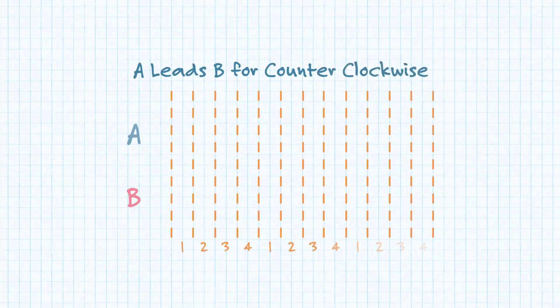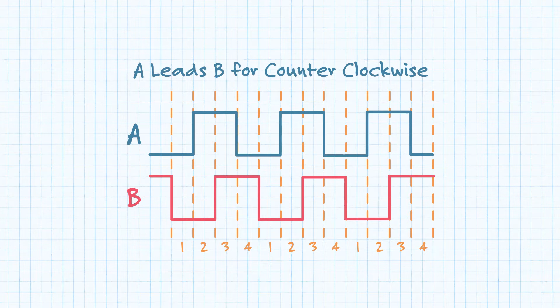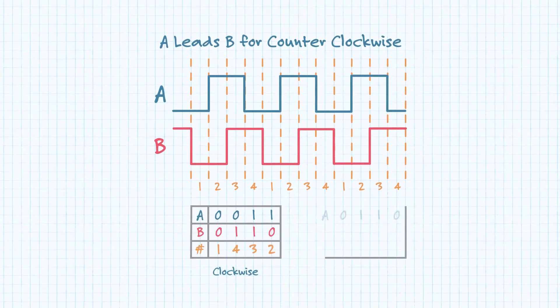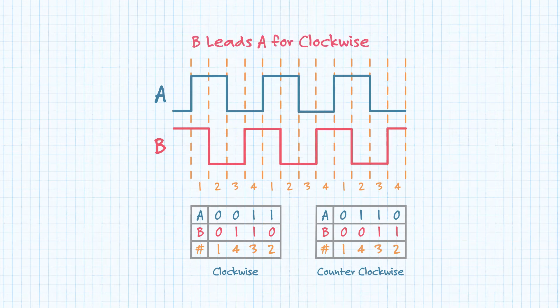With an incremental encoder, the output typically has two square waves on individual channels that are output 90 degrees out of phase of each other. With the two square waves offset by 90 degrees, as the encoder rotates, it is possible to calculate which direction the shaft is moving by looking at the order of the incoming signal state changes.